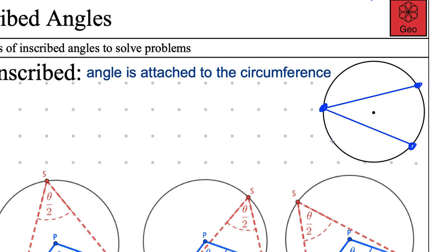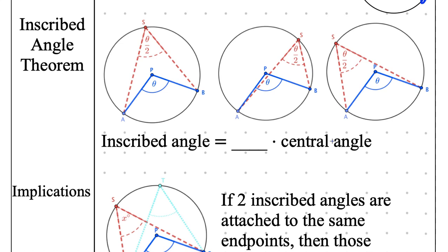Let's talk about the theorem that comes along with this — it's a package deal. I have a diagram here and I can drag point S anywhere on the circle, as long as it's not in between A and B. No matter where I drag S — here, over there — it's not going to change its angle. It's always the same angle as long as A and B don't move. It's always theta over 2. It's a really cool property — it doesn't change even though you'd think it should.